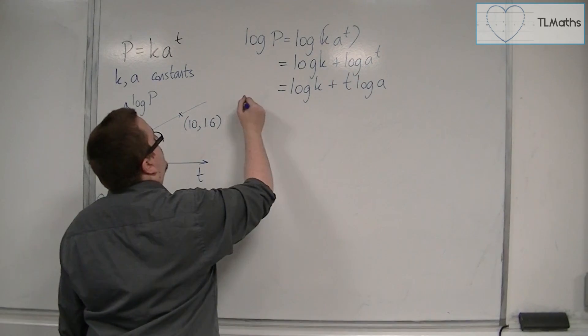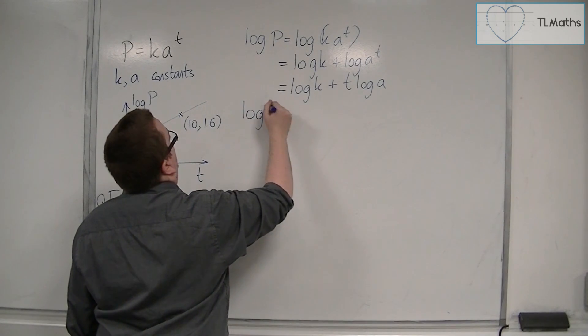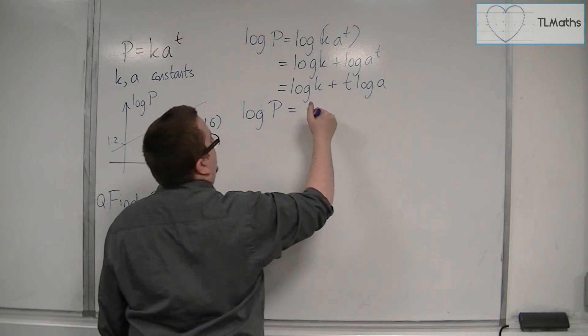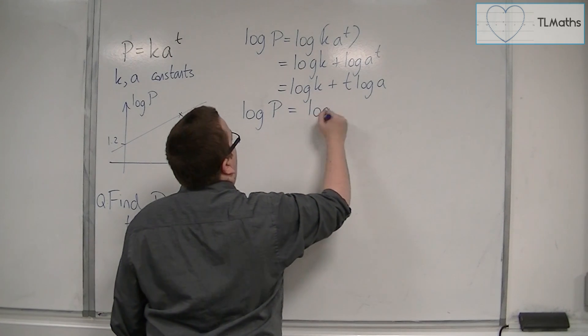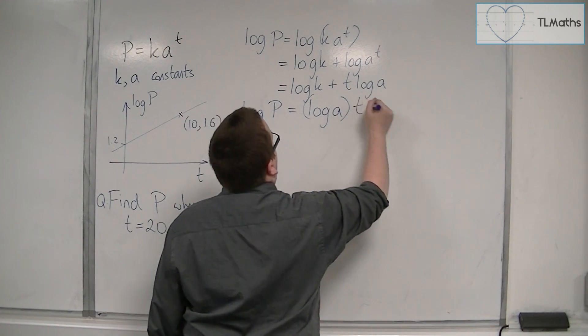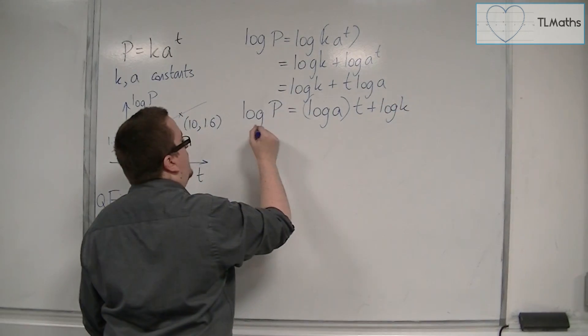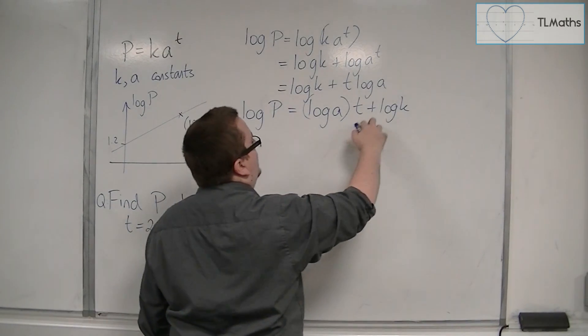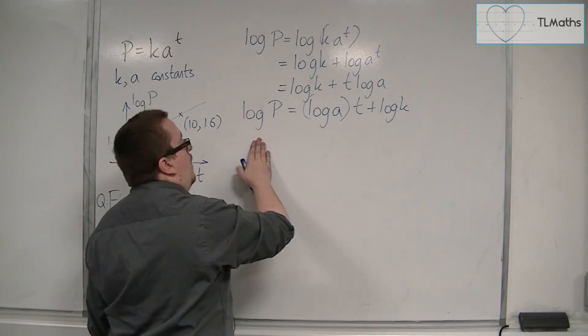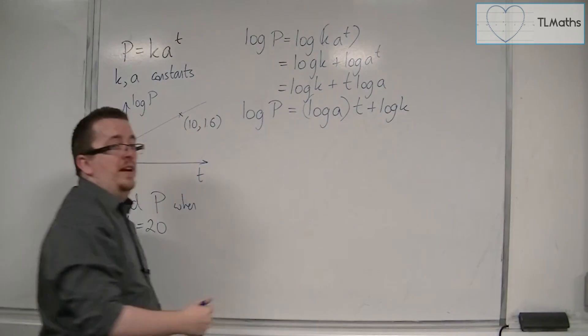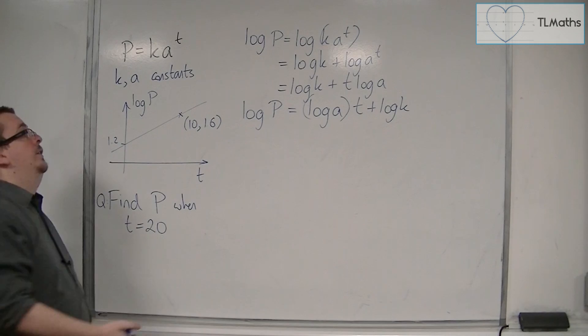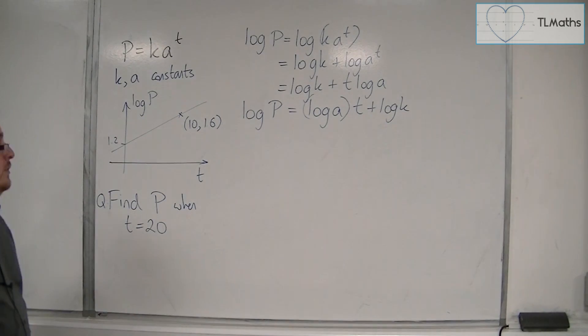And I'm going to rewrite it in the form of y is equal to mx plus C. So log A times T plus log K. So y equals mx plus C, where the y and the x are the variables, and they line up with the log P and the T, because they are variables.